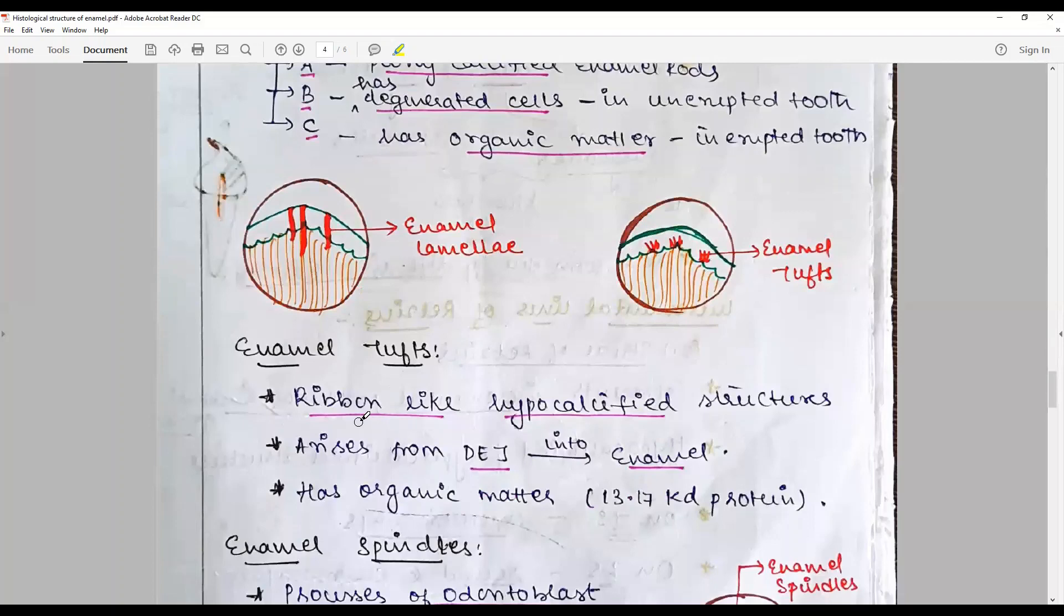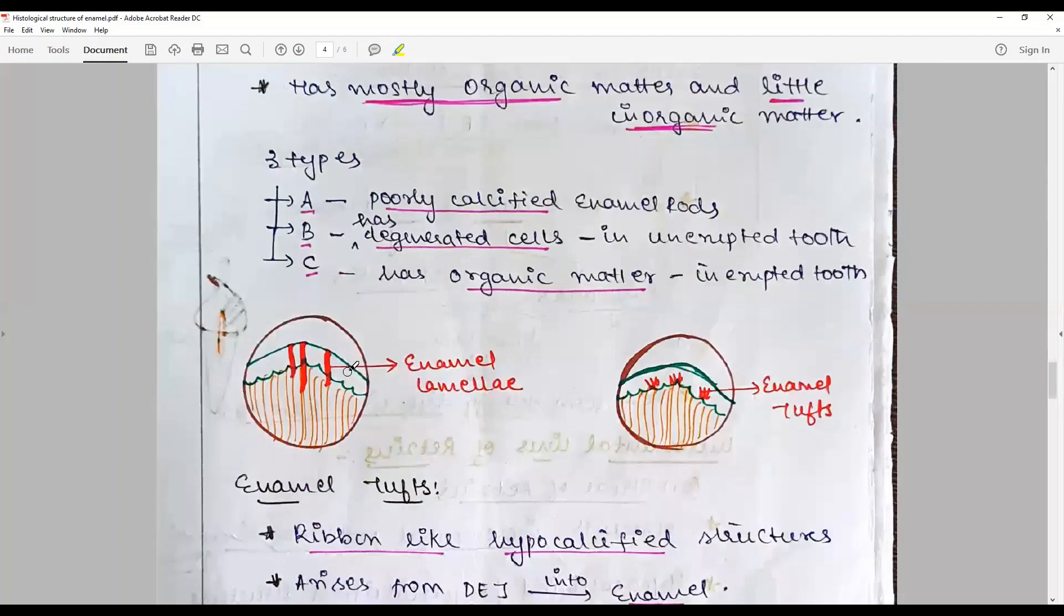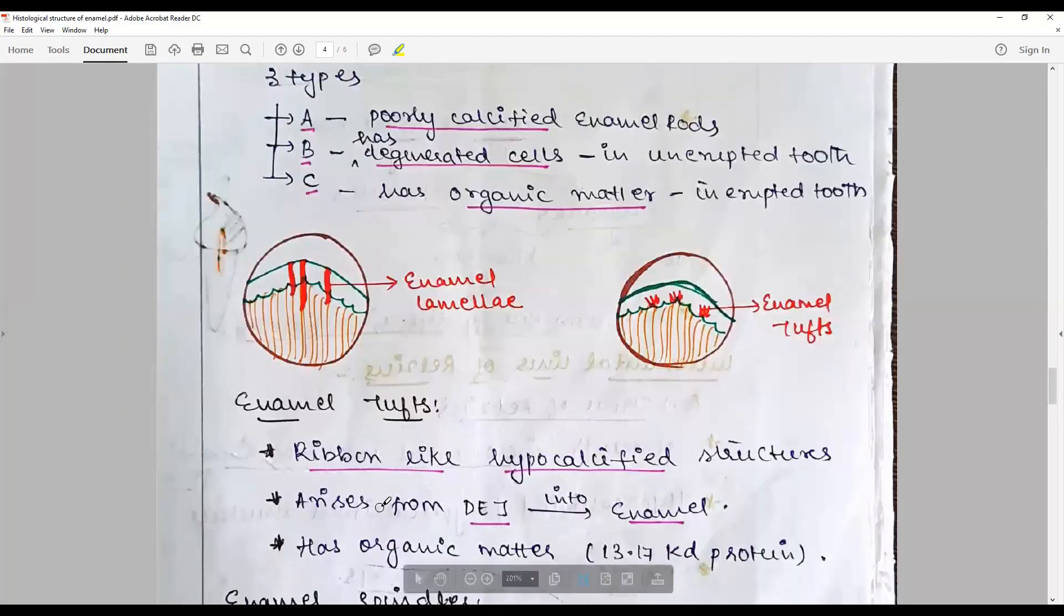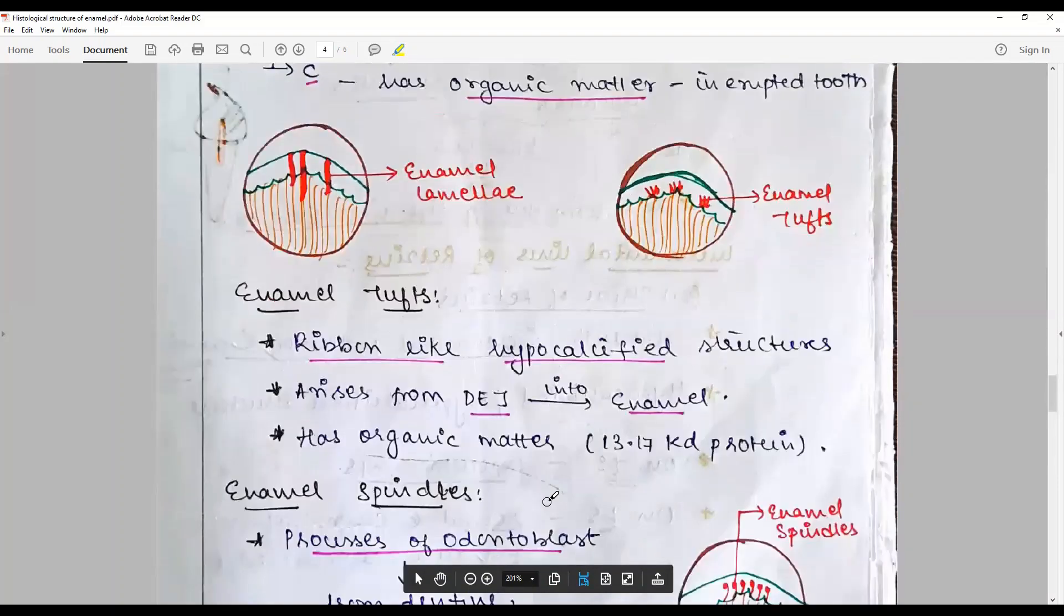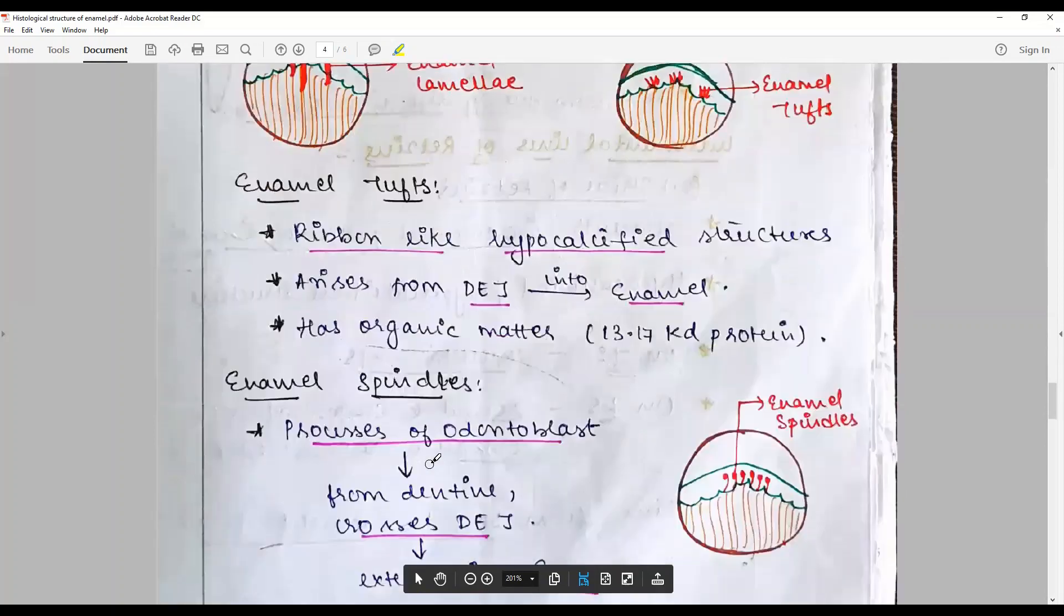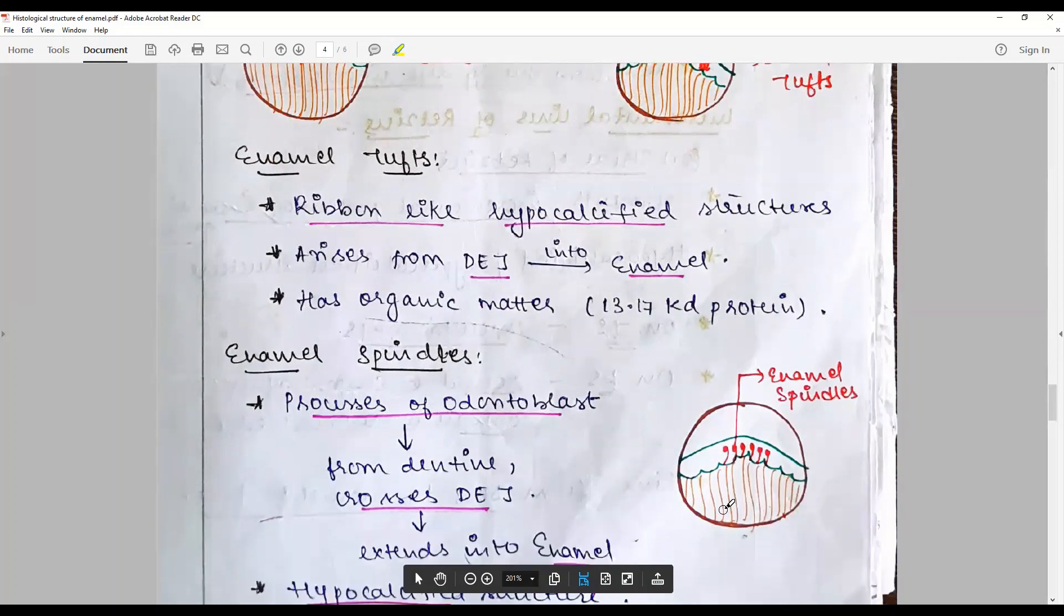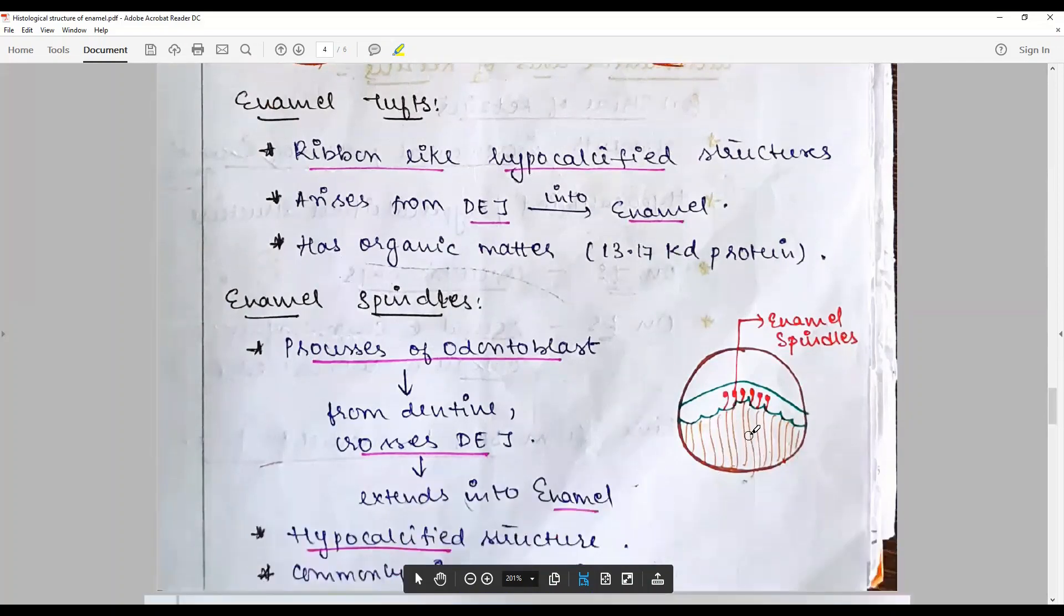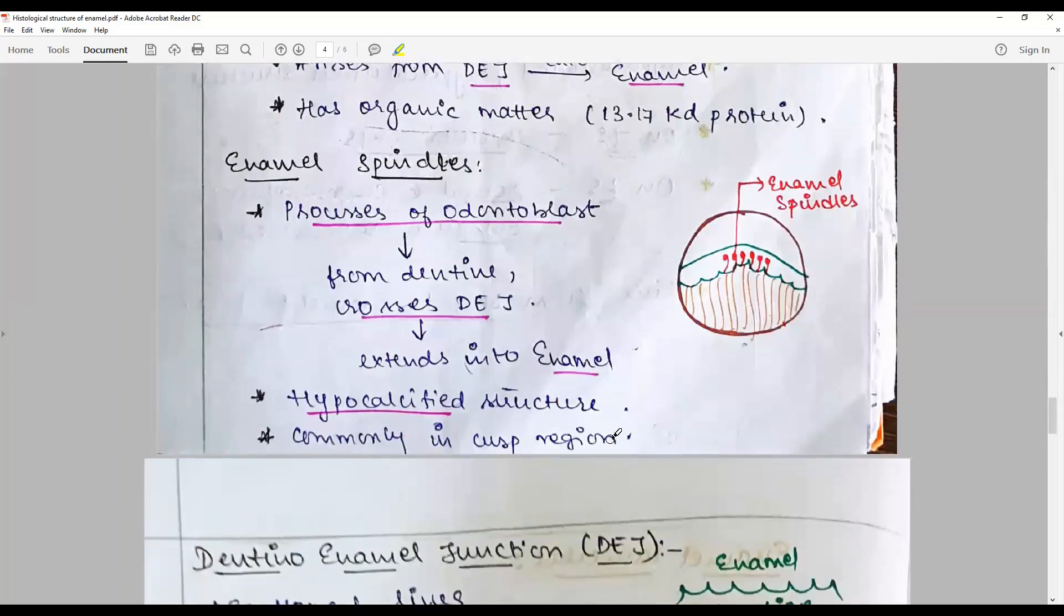Enamel tufts are ribbon-like hypocalcified structures of enamel that arise from DEJ and proceed into enamel, unconventionally or opposite to that of your enamel lamellae that arise from the surface of the enamel to be drowned. Here they are opposite. They are arising like a tuft of grass, hence the name enamel tufts. It has organic matter and enamel spindles or extensions of odontoblasts into the enamel from dentin, crosses the DEJ and extends into the enamel. And they are more common to the cuspal region.